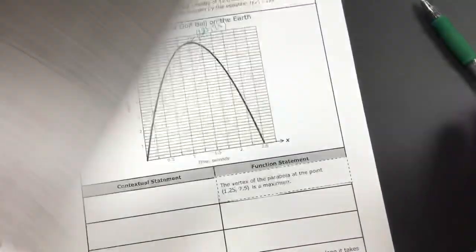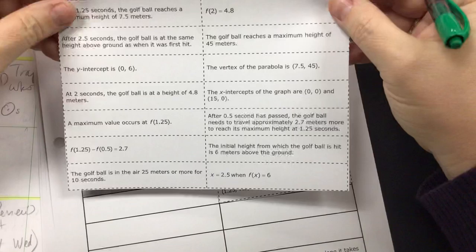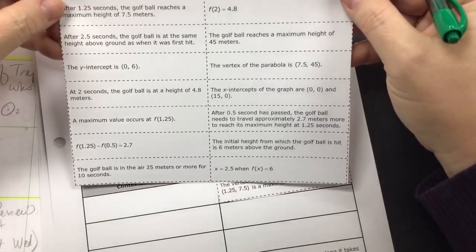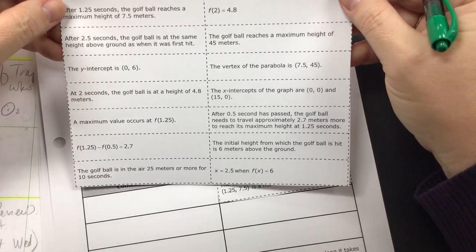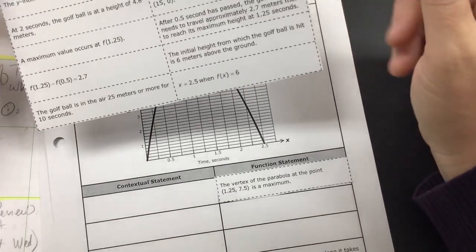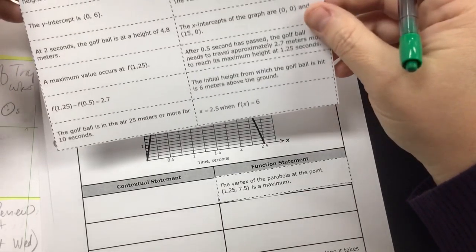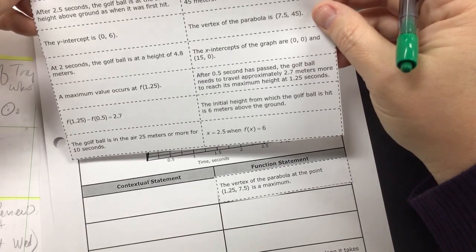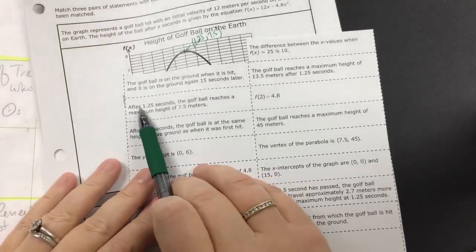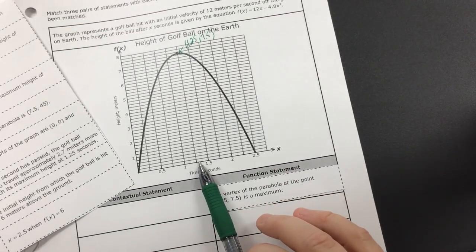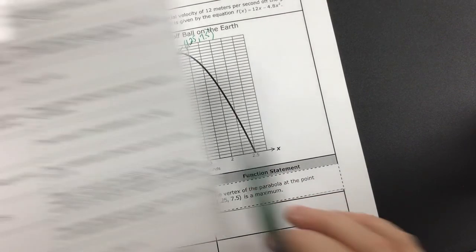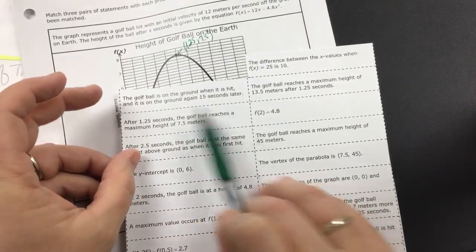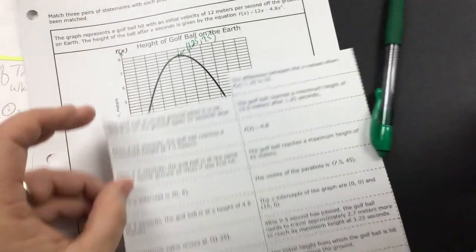So if I'm looking at a contextual statement, we're talking about the golf ball. So if I'm looking at my options, let's see here. Here we go. This one, it says after one and a half seconds. So after 1.25 seconds, sorry...